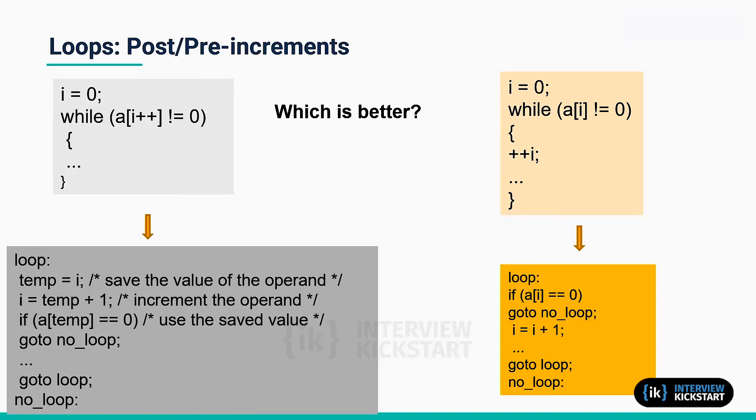On the other hand, this translates to: if the termination condition is true, go to no_loop, otherwise increment. Now how different is this? If the value of i after the loop is irrelevant, it is better to place the increment inside the loop body.